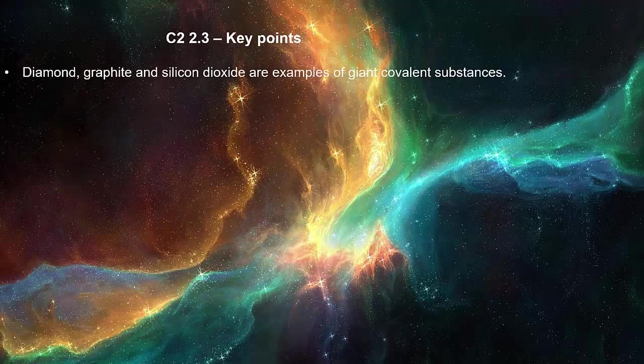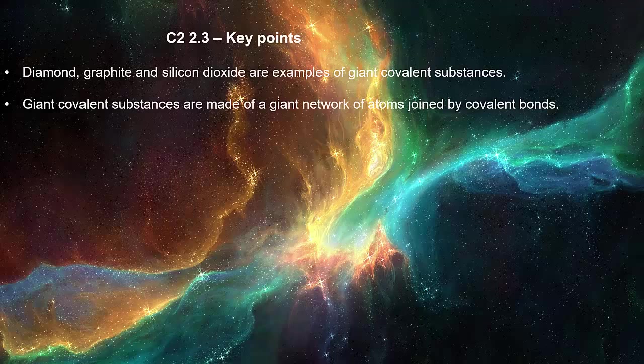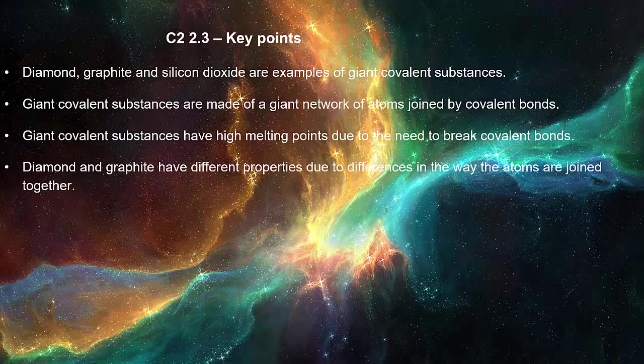Diamond, graphite, and silicon dioxide are examples of giant covalent substances. Giant covalent substances are made of a giant network of atoms joined by covalent bonds. Giant covalent substances have high melting points due to the need to break covalent bonds. Diamond and graphite have different properties due to differences in the way the atoms are joined together.